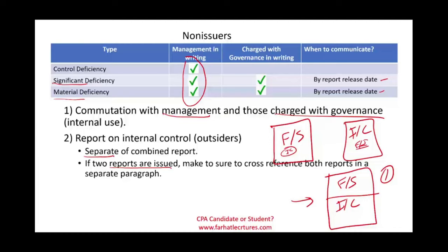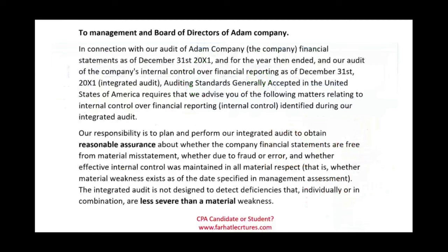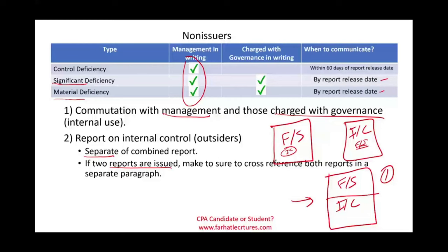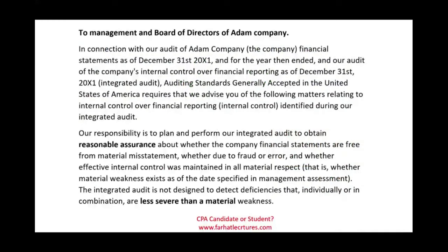Now we're going to look at actual reports and see what they look like. These reports summarize everything the auditors did and issue an opinion. Starting with non-issuers — the report prepared to management and board of directors of Adam Company. In connection with our audit of Adam Company for the year then ended and our audit of internal control over financial reporting, we have audited both the financial statements and the internal control.